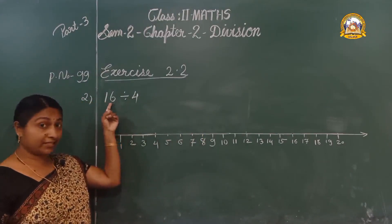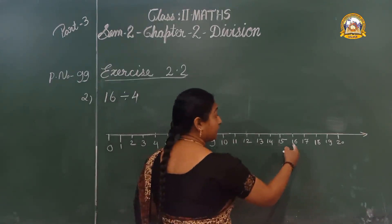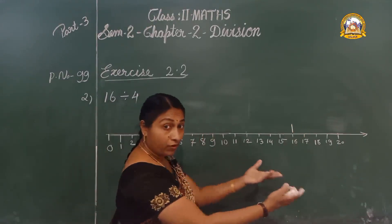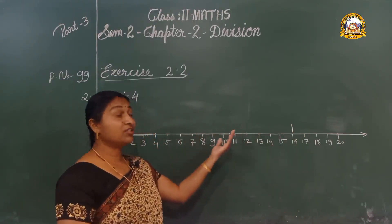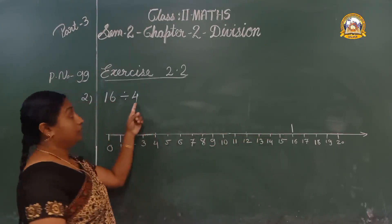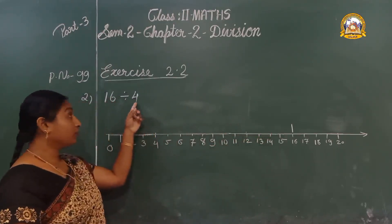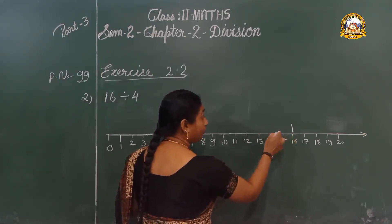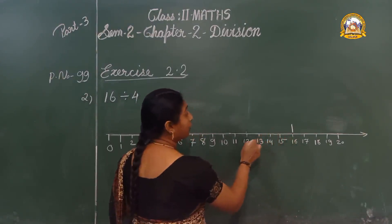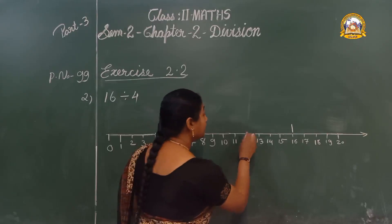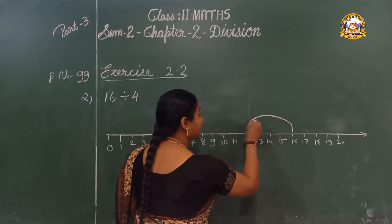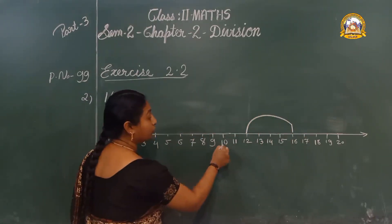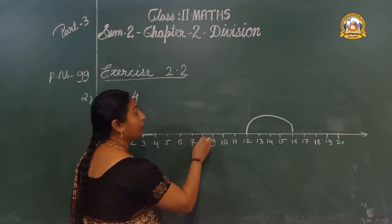We have to start from 16. Backwards or forwards? It is subtraction, so backwards. 4 steps. Here 16, then 4 steps: 1, 2, 3, 4 — now we have reached 12. First jump. Again 4 steps backwards: 1, 2, 3, 4 — now we have reached 8. Next jump, again 4 steps backwards: 1, 2, 3, 4 — now at 4.